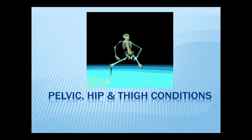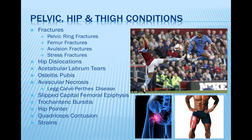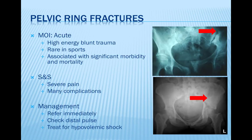The pelvic, hip, and thigh conditions to be discussed are fractures, which include pelvic ring fractures, femoral fractures, avulsion fractures, and stress fractures, hip dislocations, acetabular labrum tears, osteitis pubis, avascular necrosis, Legg-Calvé-Perthes disease, slipped capital femoral epiphysis, trochanteric bursitis, hip pointer, quadriceps contusion, and muscle strains.